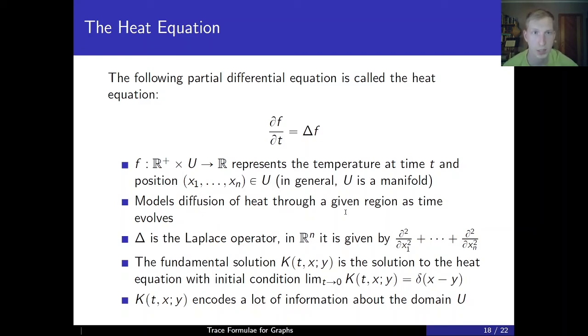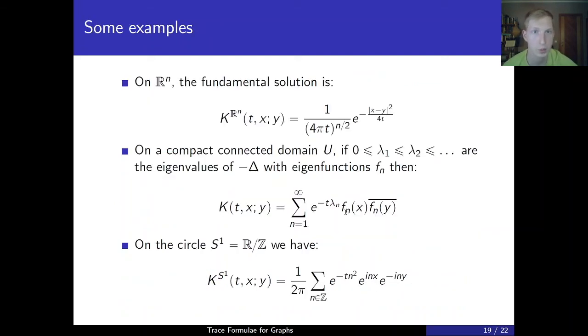The fundamental solution can be thought of as putting a unit amount of heat at t equals 0 at position y, and observing how this distribution evolves as time goes on. Formally, one should impose the initial condition that as time goes to 0, this function should tend to the Dirac delta distribution delta x minus y. But k encodes a lot of information about the domain u, and we shall explore this further. In n-dimensional Euclidean space, the fundamental solution is the well-known Gaussian distribution. On a compact connected domain u, the spectrum of the Laplace operator is discrete.